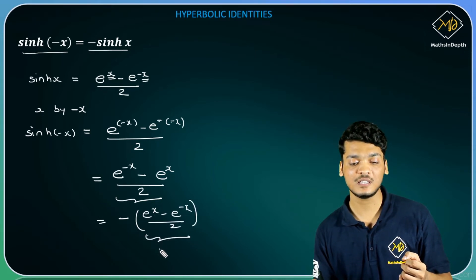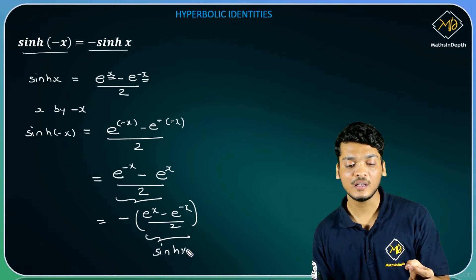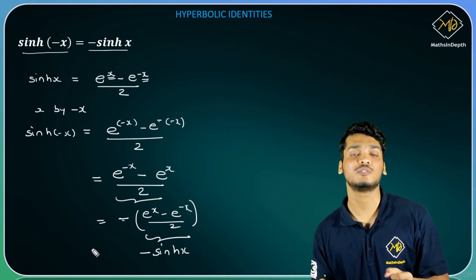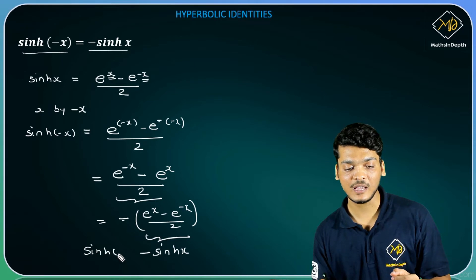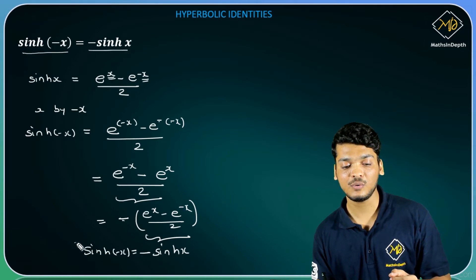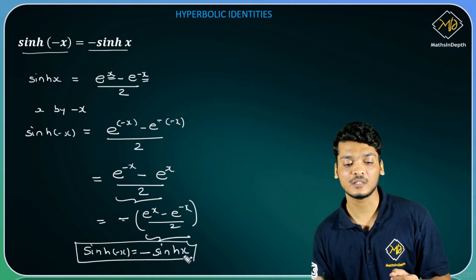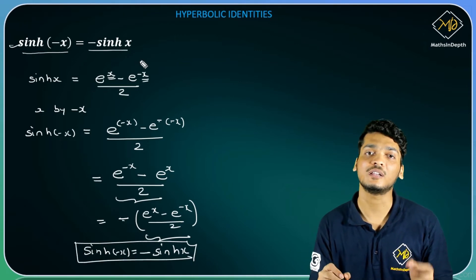And what is this? This is the formula for sinh(x), with minus outside. So hence sinh(-x) is equal to minus of sinh(x). Yahi mujhe yahan par show karna tha.